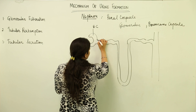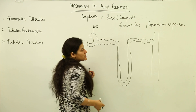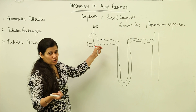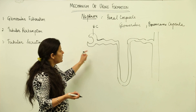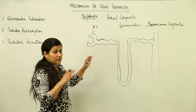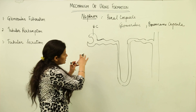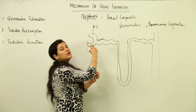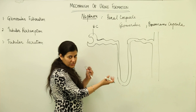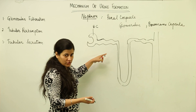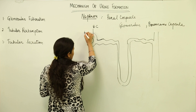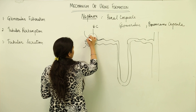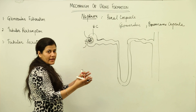The tubular parts are made up of cuboidal epithelium because it is able to secrete and absorb. As the name suggests, absorption and secretion of some substances take place here. For absorption to occur, something has to enter these tubules, and it enters through the tuft of capillaries known as the glomerulus, which brings blood to the Bowman's capsule.